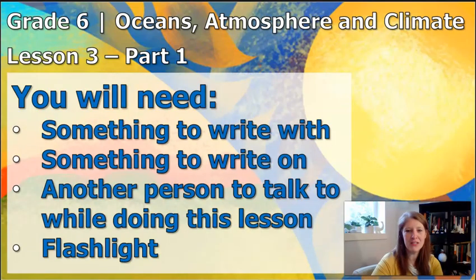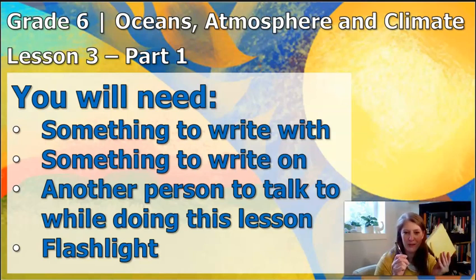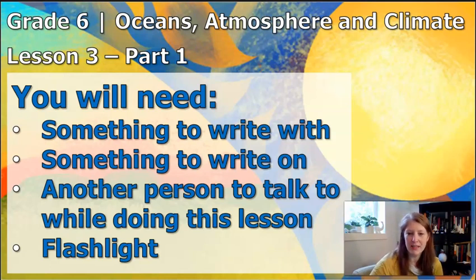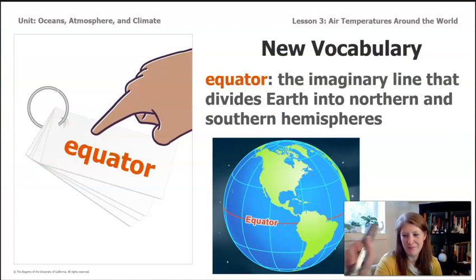So as we're starting, there are a couple of things that you're going to need. One, you'll need something to write on, to write with. I have a notebook that I'm going to be using to take notes. And then this is really important. You need another person to talk to. The reason for that is because lots of times when you're thinking of new ideas, having someone to discuss them with will help you develop your ideas even more. And then the last thing that you might need is a flashlight. Don't worry if you don't have a flashlight.